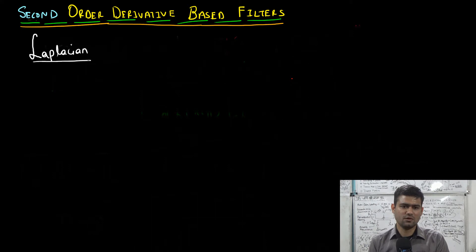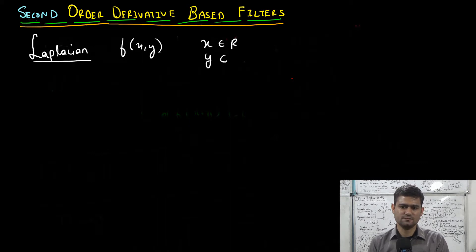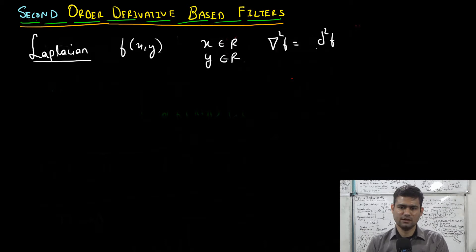The Laplacian of a 2D continuous function f, which is a function of two variables x and y where both x and y are scalars, is defined as del-squared f, which is equal to del-squared f over del x squared plus del-squared f over del y squared, where f is a function of x and y.